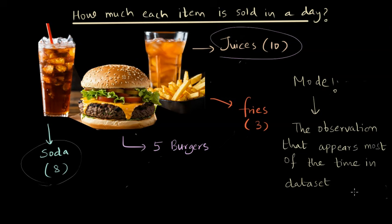In this case, the observations were soda, juice, burger, and fries. You knew how many times each item was sold: soda was sold eight times, juice ten times, burger five times, and fries three times. After that, you knew that the mode of this data is juice since it was sold the most.